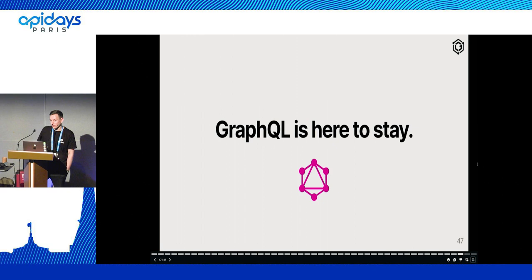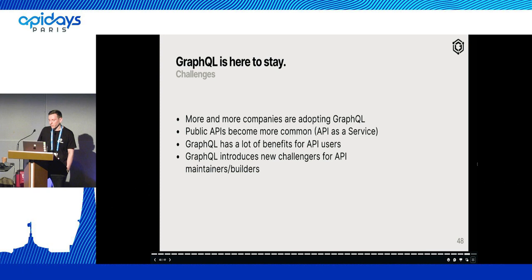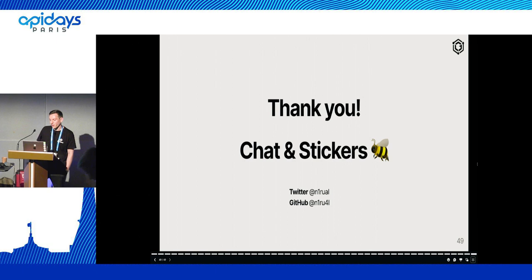What is obvious is that GraphQL is here to stay. More and more companies are adopting GraphQL. Public APIs are becoming more common — code word: API as a service. GraphQL obviously has a lot of benefits for API users, but also introduces new challenges for API maintainers and builders. I think there will be a lot of opportunities for new ideas that will change how things are today. Thank you. If you have any questions about GraphQL Hive, ask me. I also have stickers if you want stickers of the Guild open source projects.